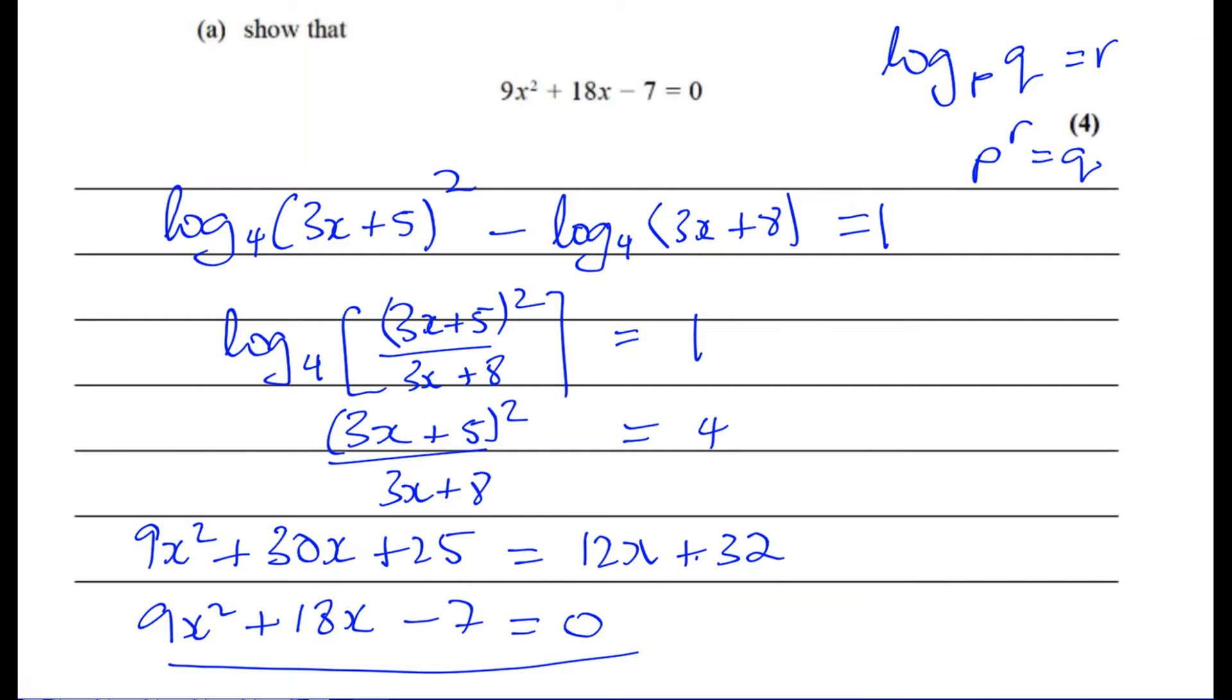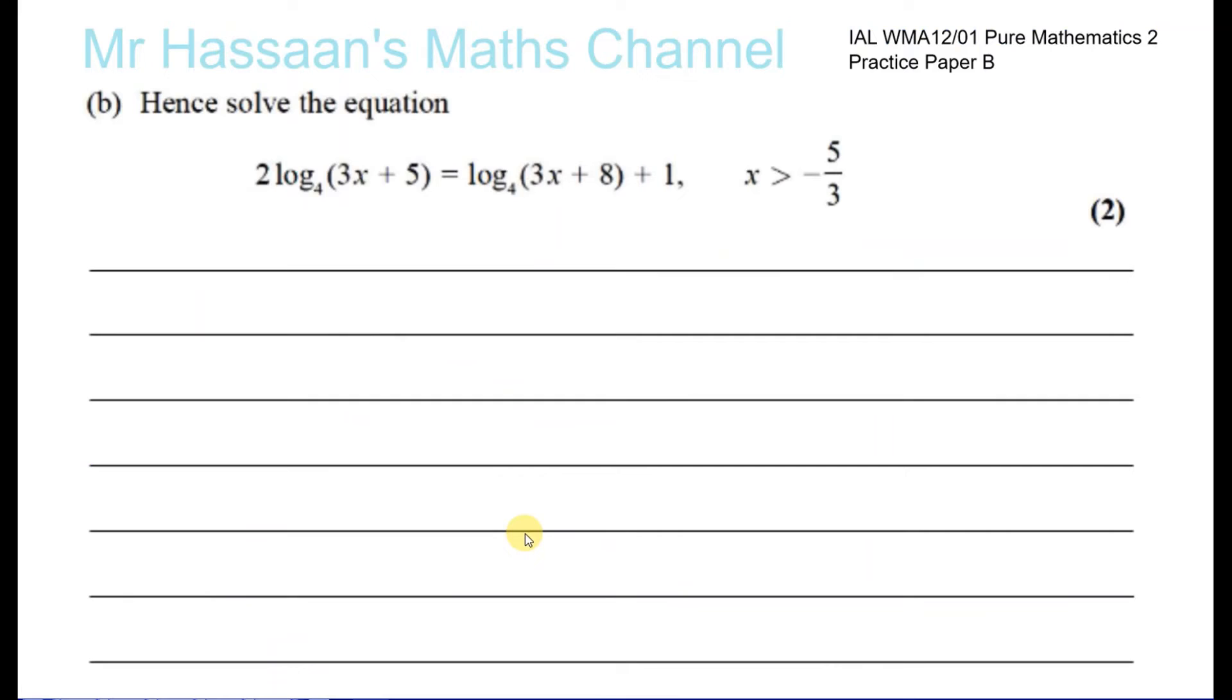And then it says part B is hence solve this equation. So let's just quickly go back and get what we had before. Okay, so this is what we had to simplify before in the other part of the question. And just checking that it's exactly the same. Yes, it's exactly the same. So we can just take our result from the last part of the question and use that to continue. Okay, so that was the result we got in the last part of the question. We had to show that that led to this. And now we can use this to solve this equation. So basically, to solve this equation, I have to try to factorize this.